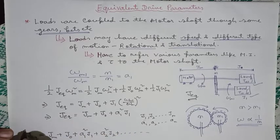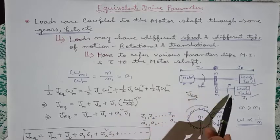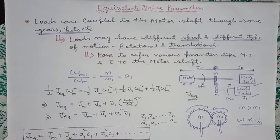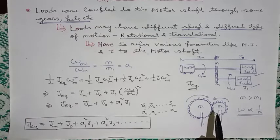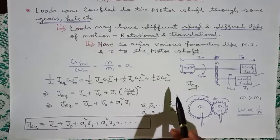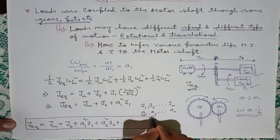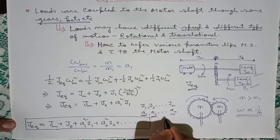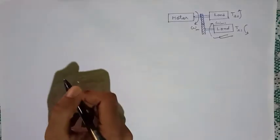Now let us see how we can represent the equivalent torque of the system referred to the motor shaft. Before that, I want to clarify that if instead of gears a pulley system is used, then N and N1 will be replaced by the diameters of the pulleys. Basically, a1, a2, up to am are the ratios of the load speed to the motor shaft speed.